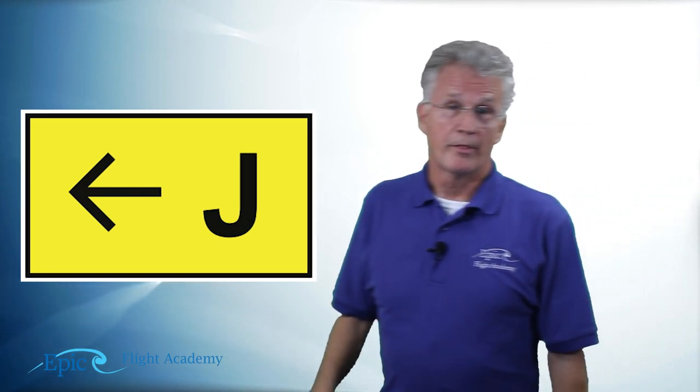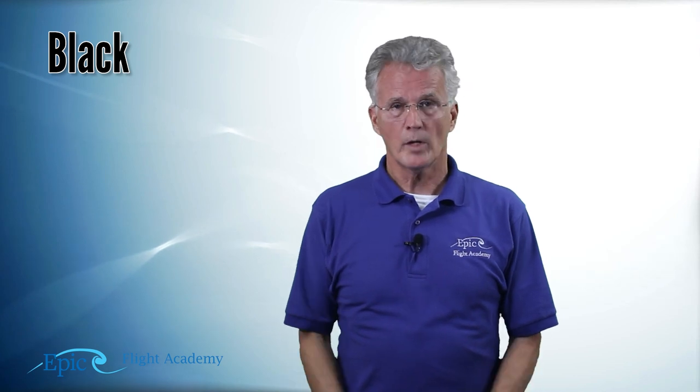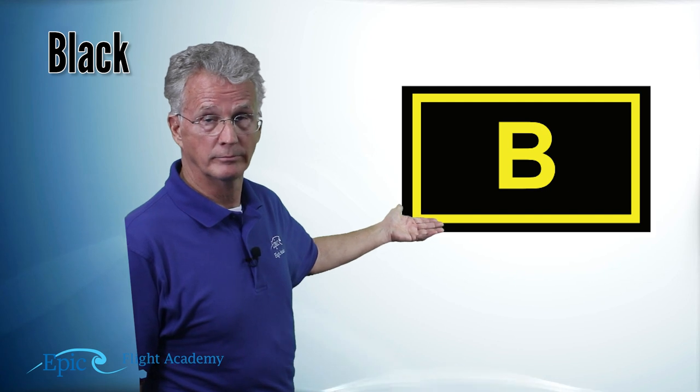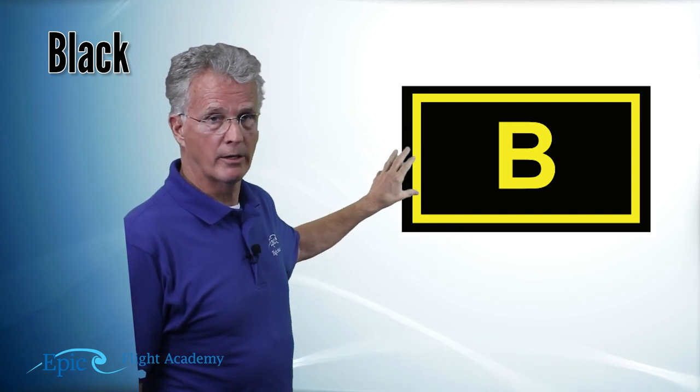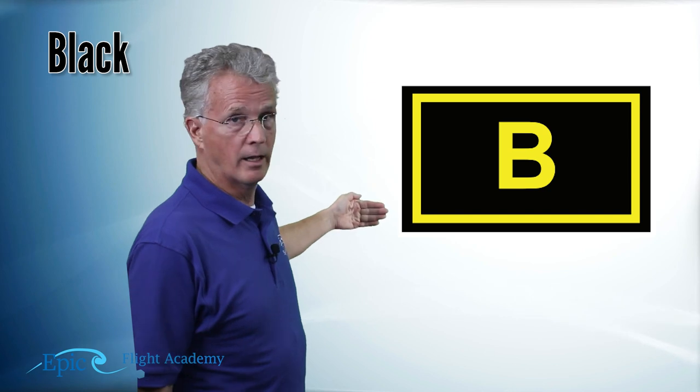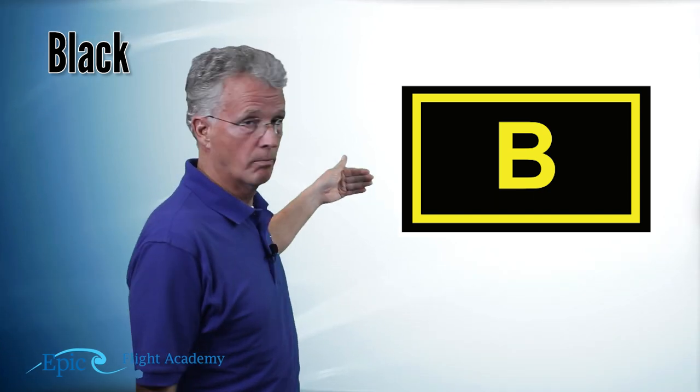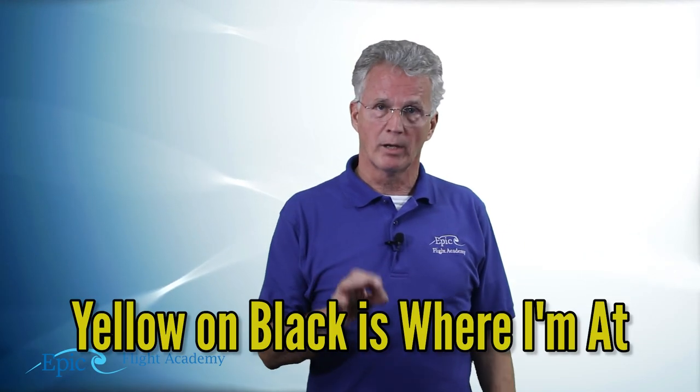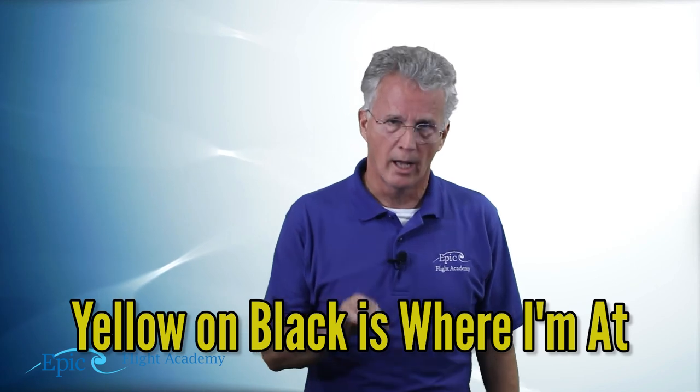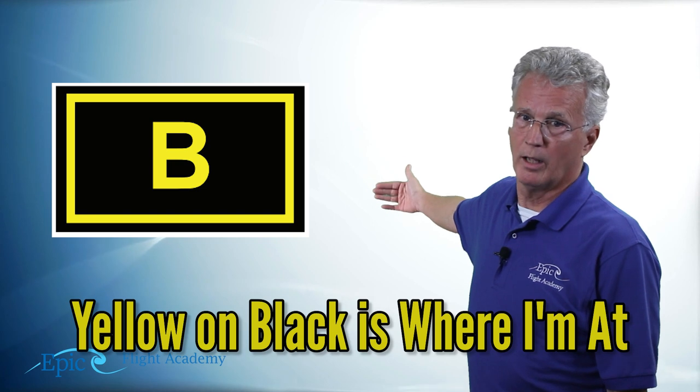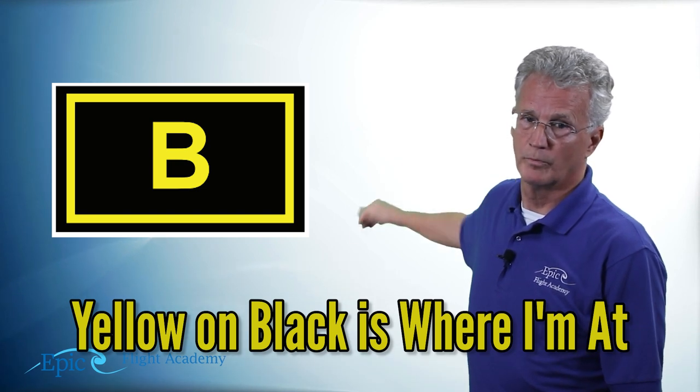Now, the third category are the black ones. Here's an example. See the bright yellow B on the black background. Letters are taxiways. You're on taxiway B, or as pilots would say, Bravo. There's a neat little rhyme to help you remember this. Yellow on black is where I'm at. So, if I look at this yellow B on the black background, I'm on taxiway Bravo.